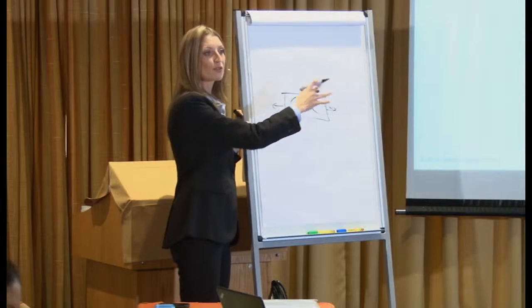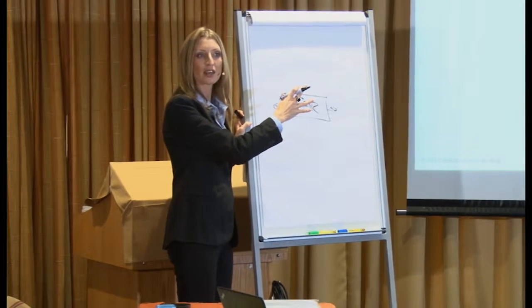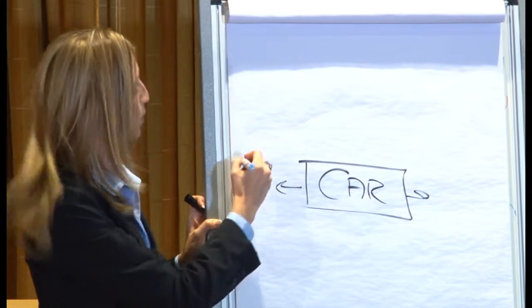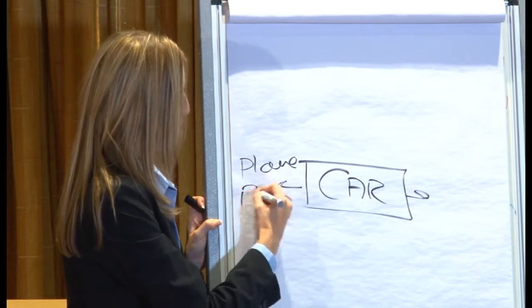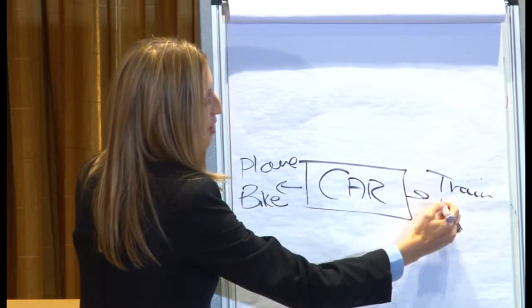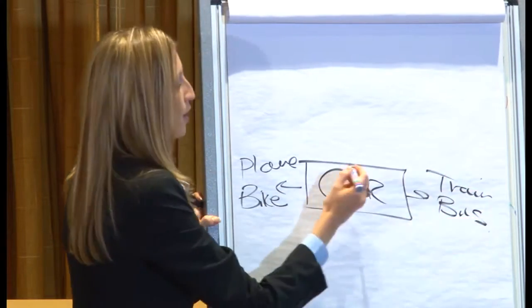What would go in line with cars? If we were doing lateral thinking, what would we put there as other modes of transport? So we had plane, bike, train, bus.